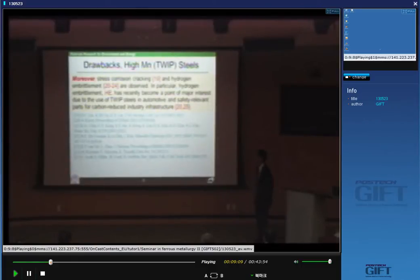Moreover, there are drawbacks. Stress corrosion cracking and hydrogen embrittlement are observed. In particular, hydrogen embrittlement has recently become a point of major interest due to TWIP steel going to be used in automotive and safety-relevant parts for carbon-reduced industry infrastructure.